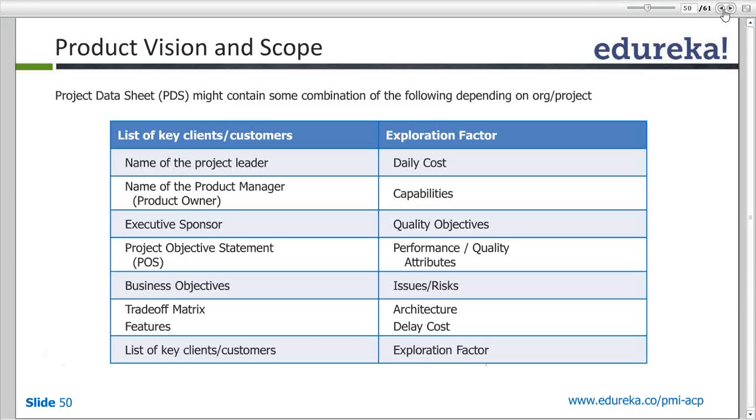So this is where not knowing the why prevents you from thinking about acceptance criteria in a broader way. It helps you define the personas.